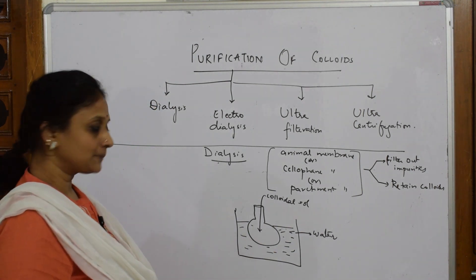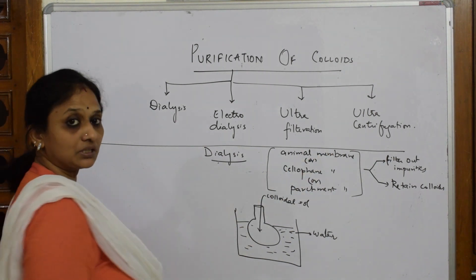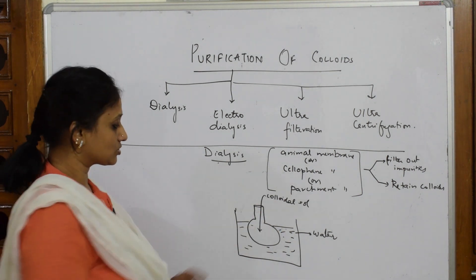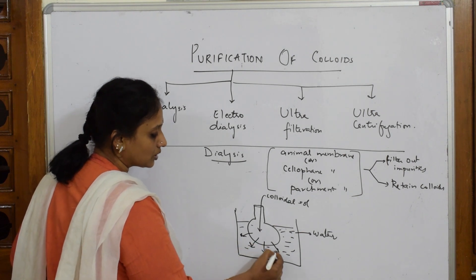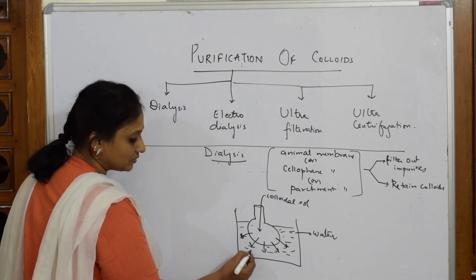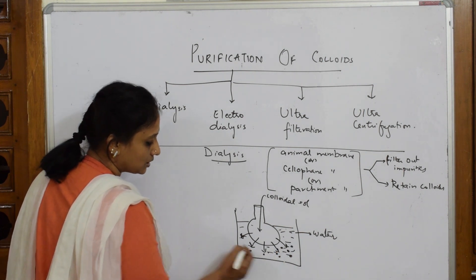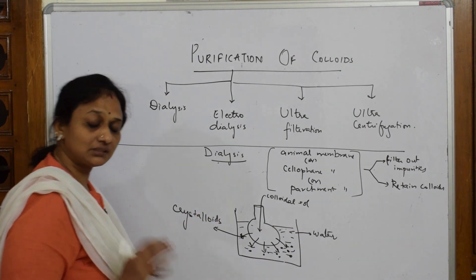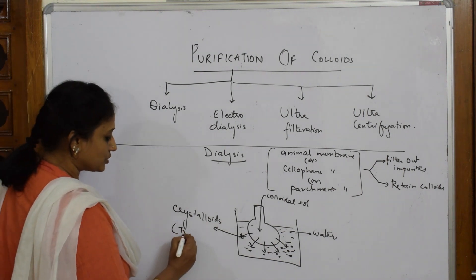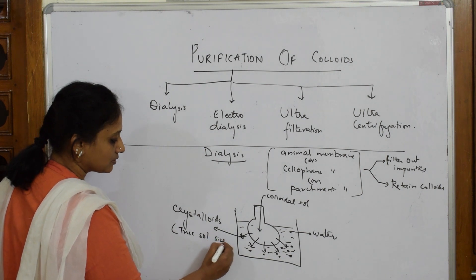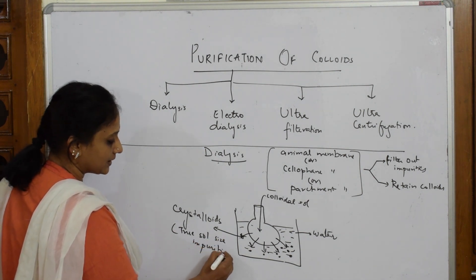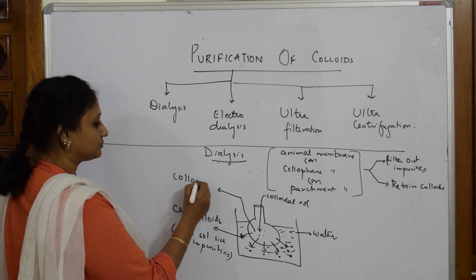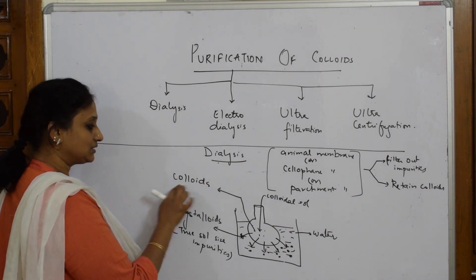Whichever colloidal sol you are supposed to purify, you introduce that colloidal solution into the bag. This is your animal membrane. When there is continuous flow of water, all the impurities present in the colloidal sol come out into the water. These impurities that come out are called crystalloids — they have true solution size particles.